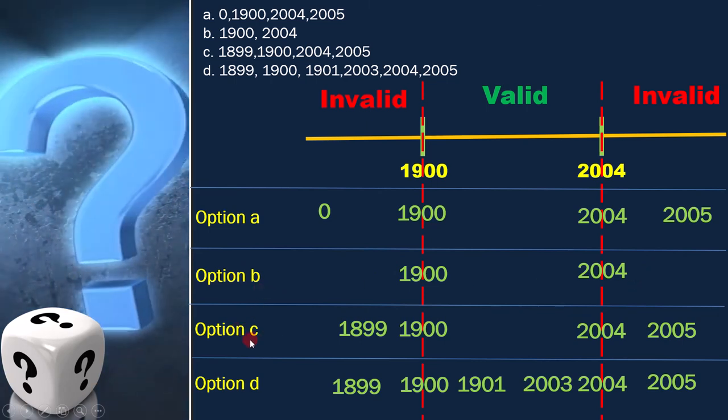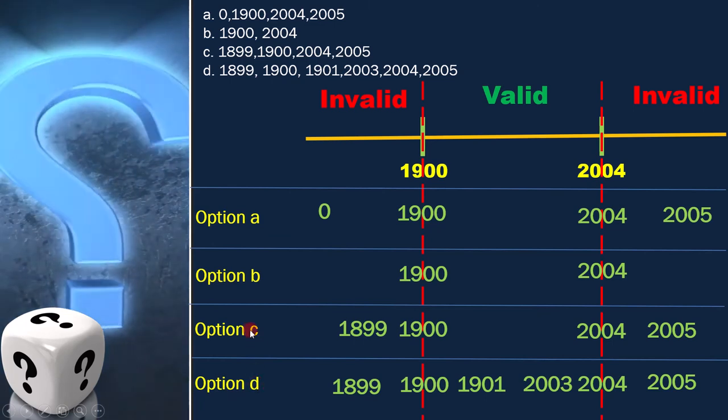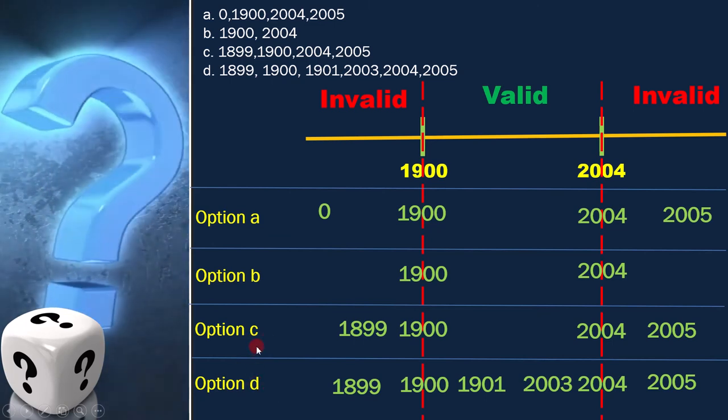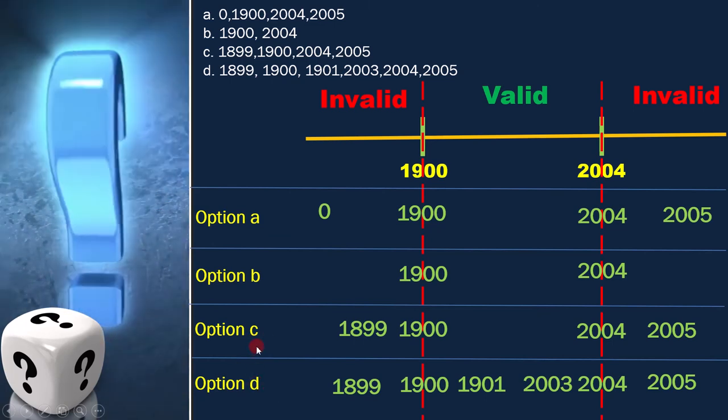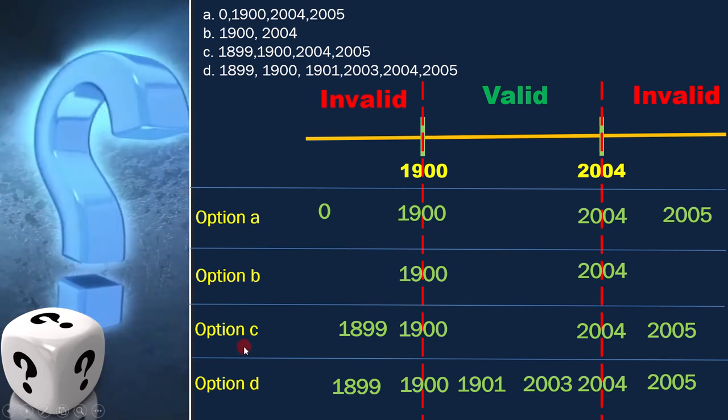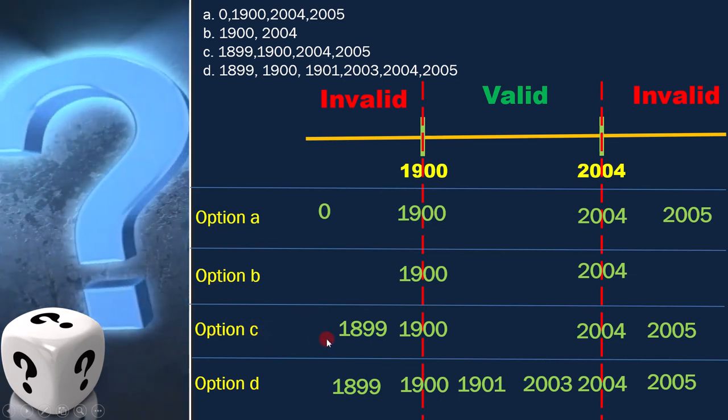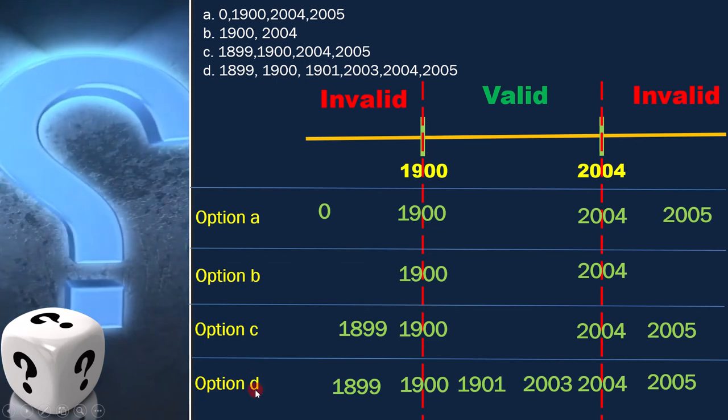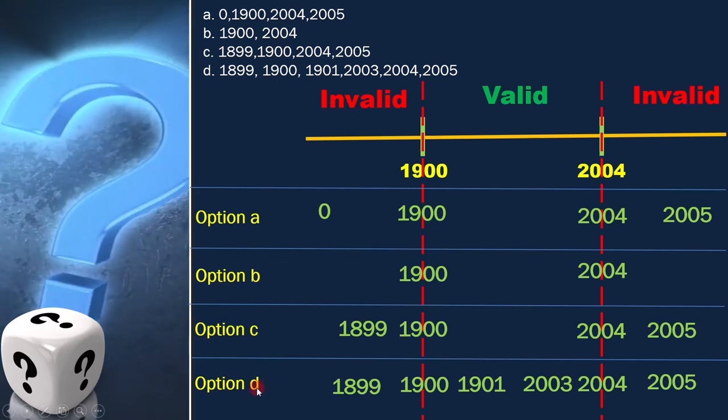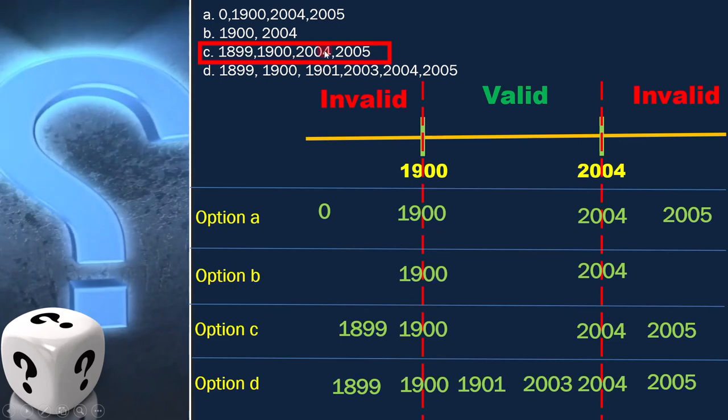Now we are left with the last two options. Since in the question nothing is mentioned, we have to select two-point boundary value analysis instead of three-point boundary value analysis. For this question, option C is the correct answer.